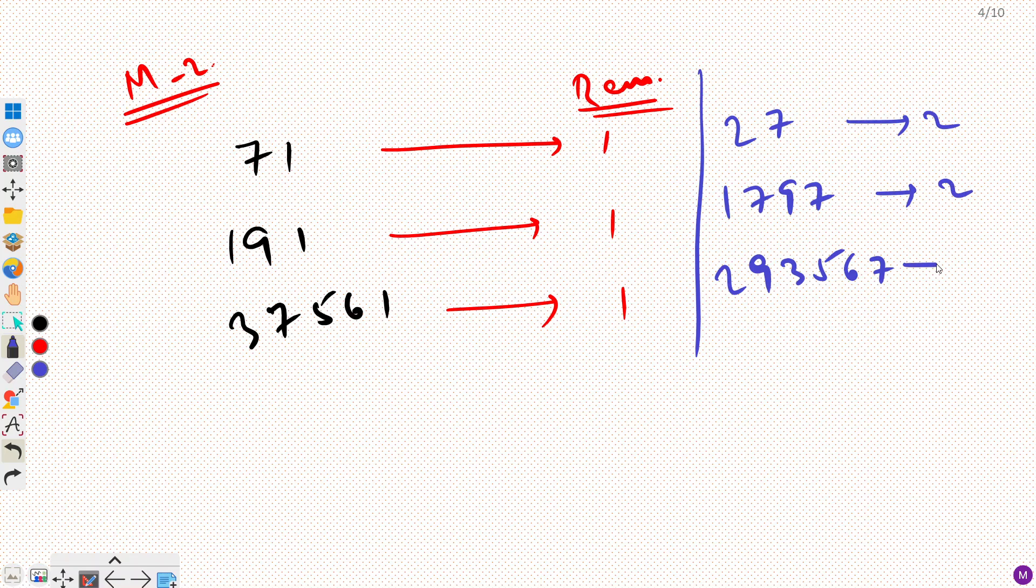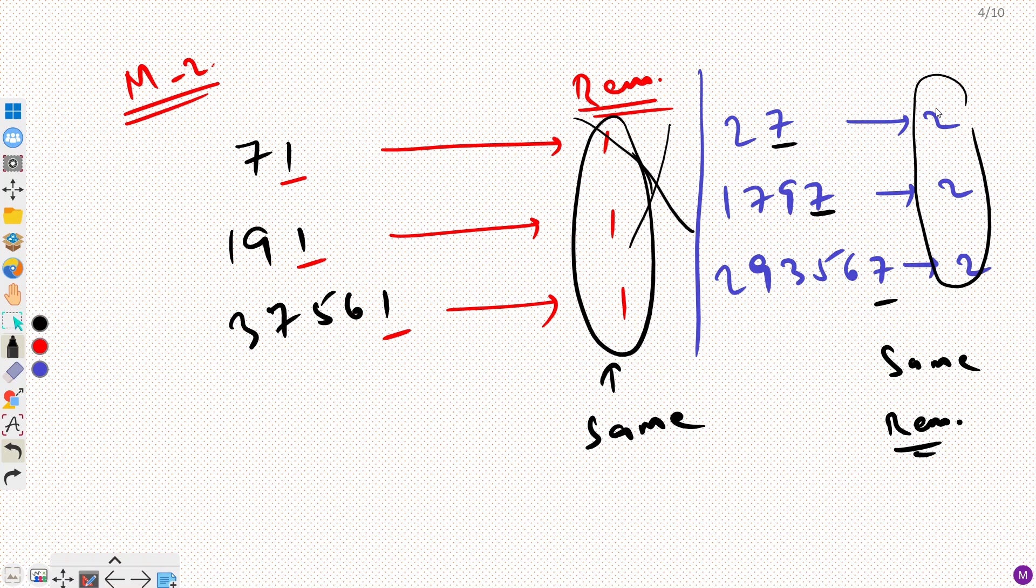So the thing to notice over here is that when you have unit digit as same then you are going to get a remainder of same, are going to get a same remainder when you divide by 5. Here all the places were same and unit place digit. So again I got same remainder. I am not worried, I am not concerned with what remainder I am getting. We don't have to focus on that. We don't really care what remainder I am getting.